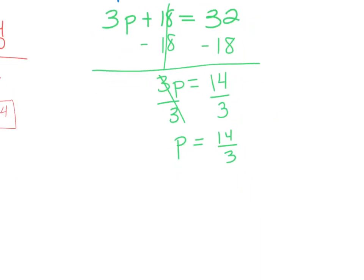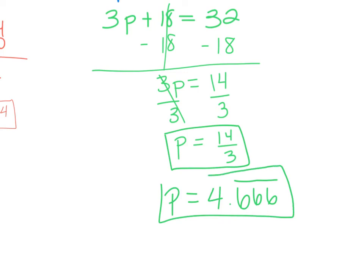That can be your final answer. Or if you type it on Desmos, you will get p equals 4.666666 repeating. So I'm just going to write a few sixes and then draw my repeat line on it forever and ever and ever. So both of these are acceptable answers.